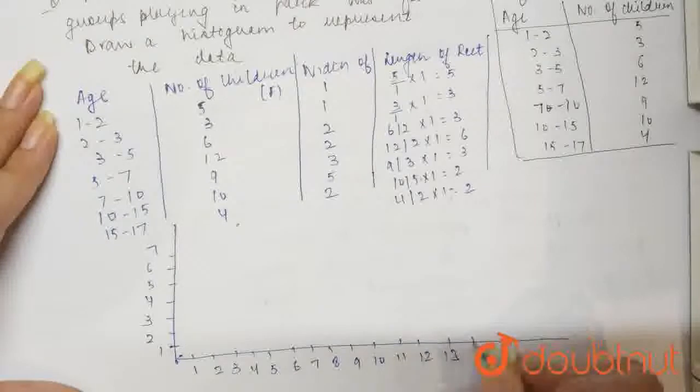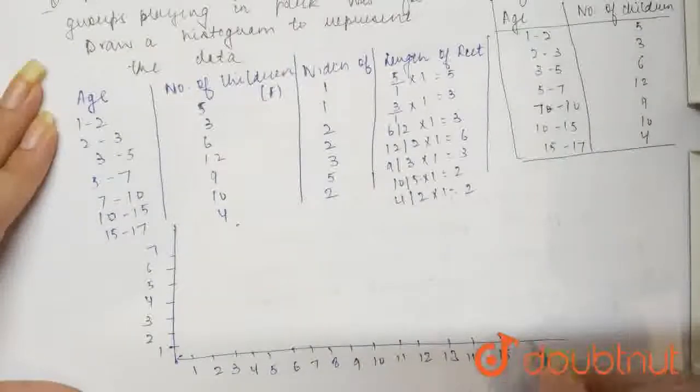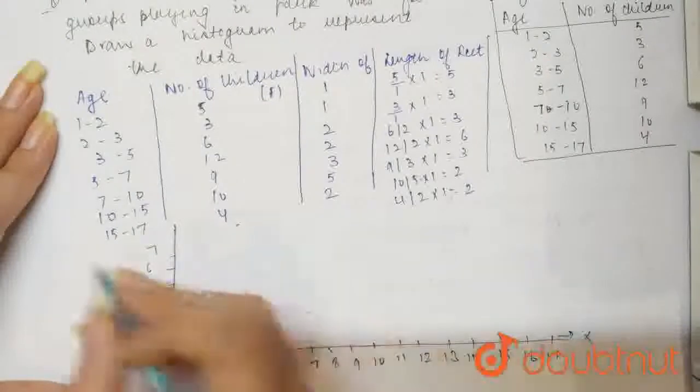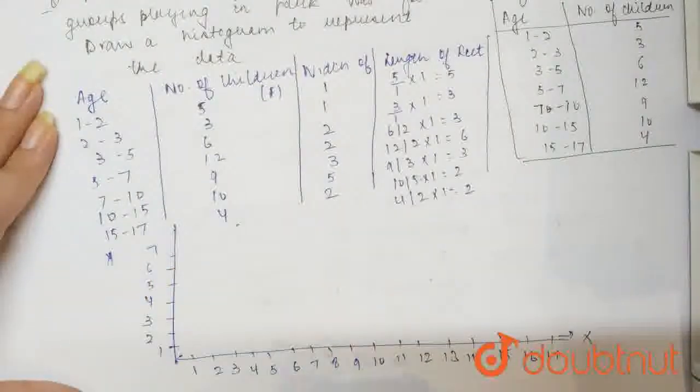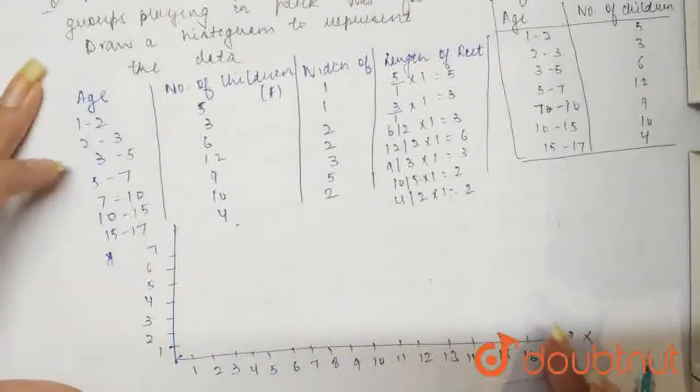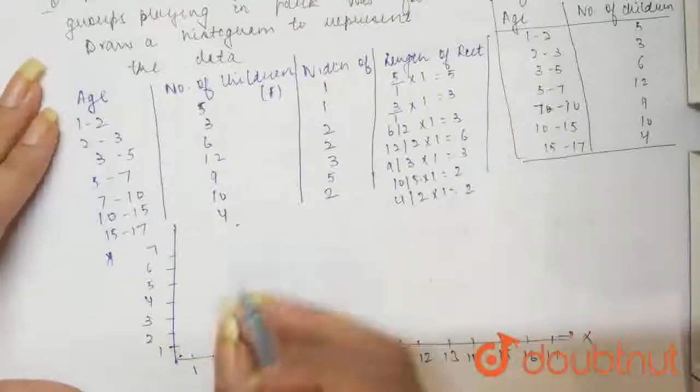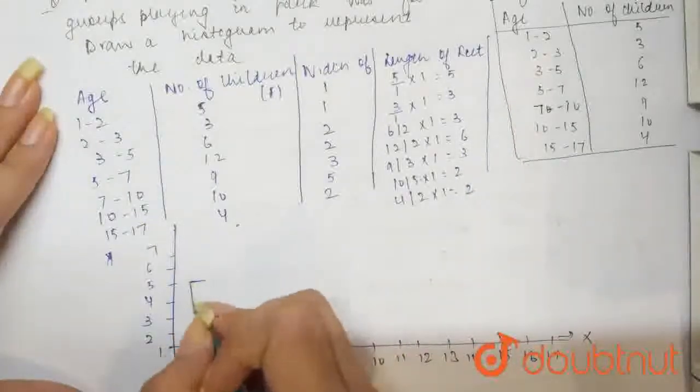Okay, 10, 11, 12, 13, 14, 15, 16, 17. Let this be x axis and this is y axis. Now what we have to do, we have to say, this is age in years. We have age 1 to 2, so from 1 to 2, we will mark 5. So from 1 to 2, this will be 5.